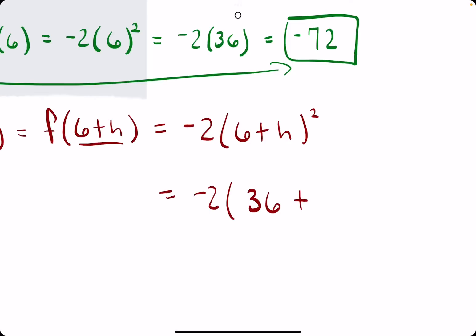plus 6 times h times 2. So 6 times h times 2 is 12h, plus the last term squared, so h squared.